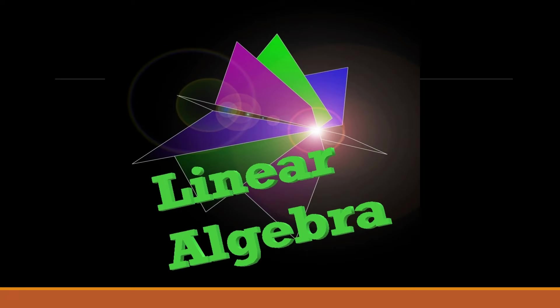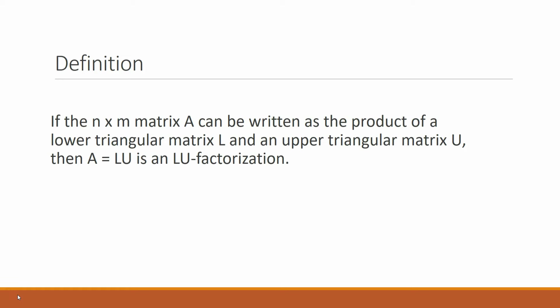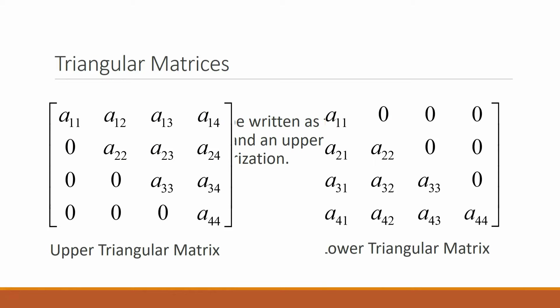This is a video on linear algebra discussing LU factorization. Basically, this means that any square matrix can be written as two separate triangular matrices which, when multiplied together, form the original matrix. A triangular matrix is one in which there are only zeros above or below the main diagonal.